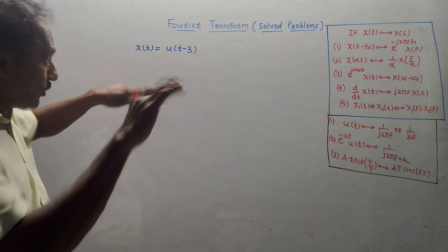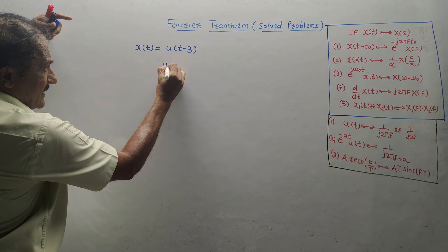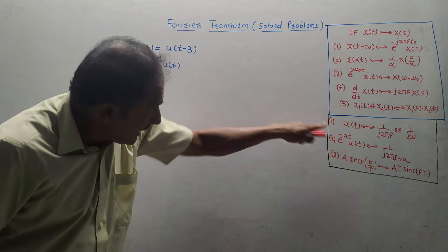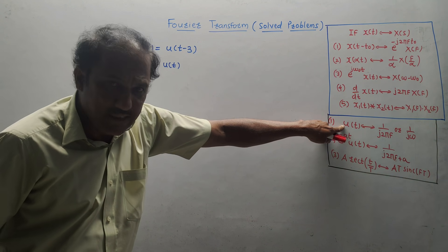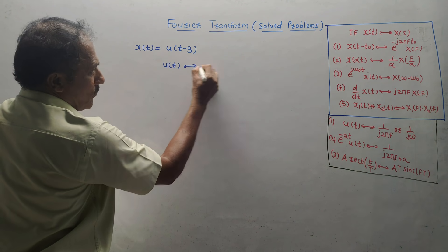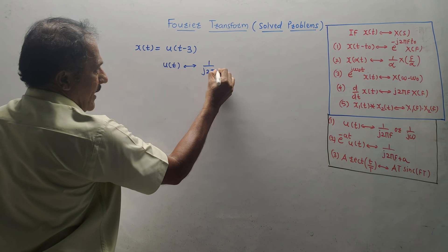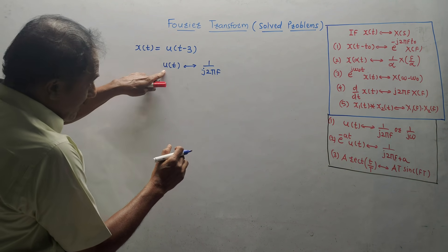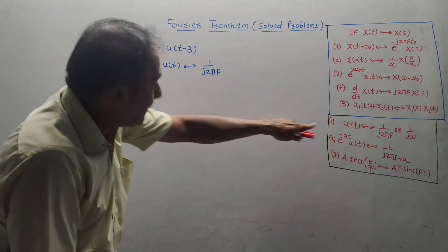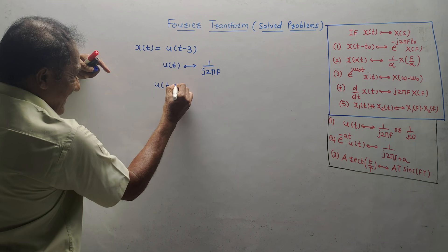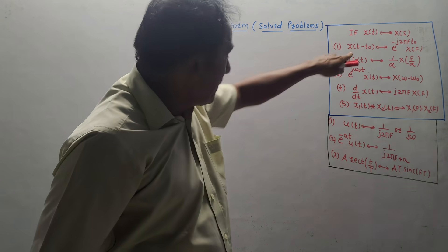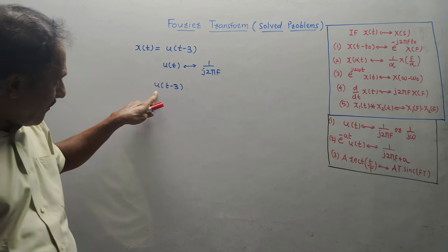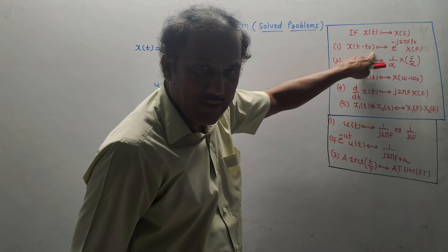But here U(T − 3) is given. So we need to think: what is the basic signal related to this? The basic signal is U(T). Looking at the given equation U(T − 3), the form is T minus something — so the applicable property is the time shifting property, where T₀ = 3.